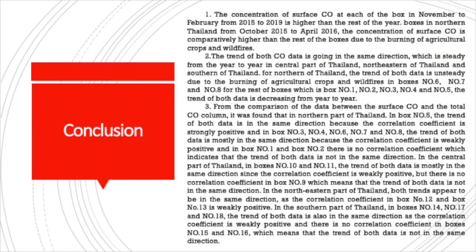The conclusions of this project are as follows. First, the concentration of surface carbon monoxide in each box from November to February during 2015 to 2019 is higher than the rest of the year. In boxes in Northern Thailand from October 2015 to April 2016, the concentration of surface carbon monoxide is comparatively higher than in other boxes, due to the burning of agricultural crops and wildfires.